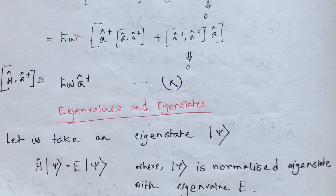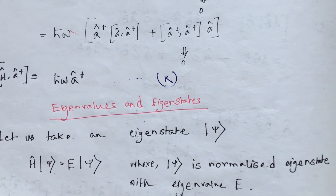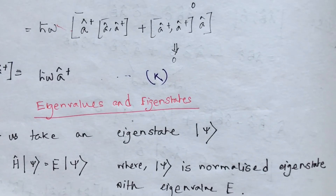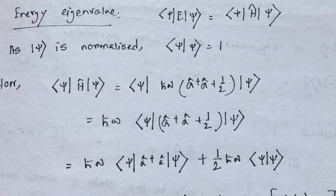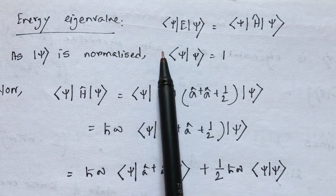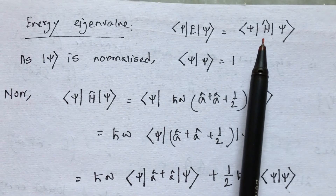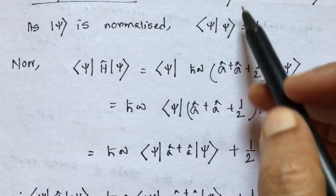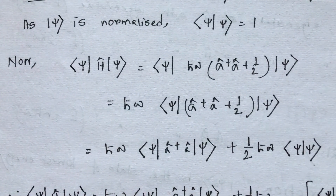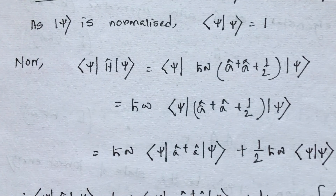Having these commutation relations of the ladder operators individually with the Hamiltonian, let's begin the proof that the minimum energy eigenvalue is half ℏω, corresponding to the ground state of the harmonic oscillator. We begin with the time-independent Schrödinger equation: H|ψ⟩ = E|ψ⟩, where ψ is the normalized eigenstate with energy eigenvalue E. Since we need to calculate the expectation value of energy, and ψ is normalized so its length equals 1.